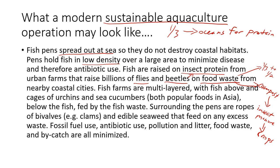The fish farms are multi-layered: fish above, with cages of urchins and sea cucumbers below that feed on fish waste, surrounded by ropes of bivalves like oysters or clams and edible seaweed that absorb any excess waste. Fossil fuel use is minimized compared to wild-caught commercial fishing, antibiotic use is minimized due to low population density, and pollution, litter, food waste, and bycatch are all minimized.